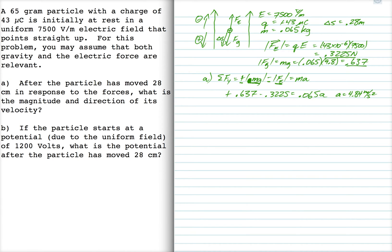Now I also know delta S, which is 0.28 meters. That's positive because it's directed downward. And I know the initial velocity is 0 because I'm told that the particle is initially at rest. So I can use this equation.